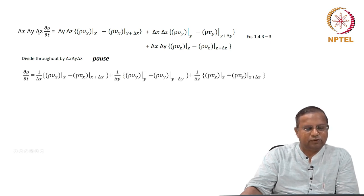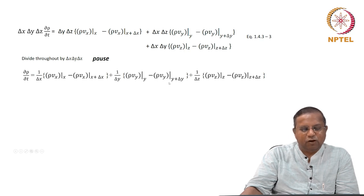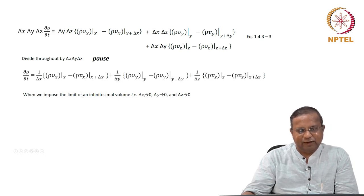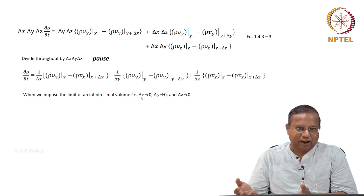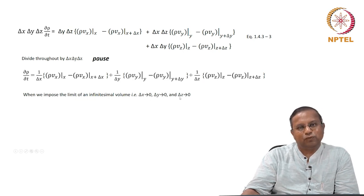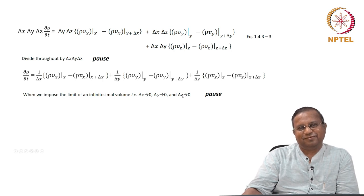If you divided throughout by delta x · delta y · delta z, you got ∂rho/∂t on the left side. On the right side, delta y · delta z cancel out and delta x remains in the denominator for the x-direction term; similarly delta y remains in the denominator for the y-direction term, and delta z for the z-direction term. Now, if you take the limit of delta x tending to 0, delta y tending to 0, delta z tending to 0 — that is the essence of calculus — please pause the video, work that out, and see what you get.